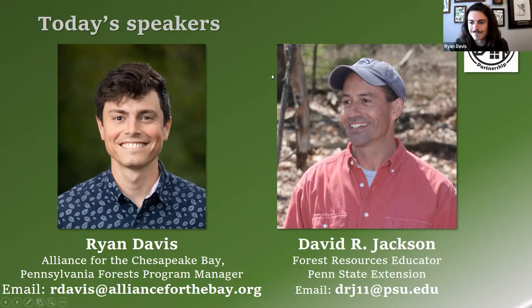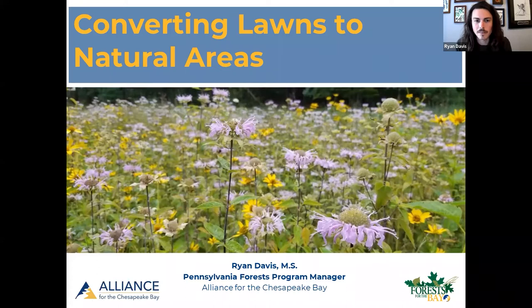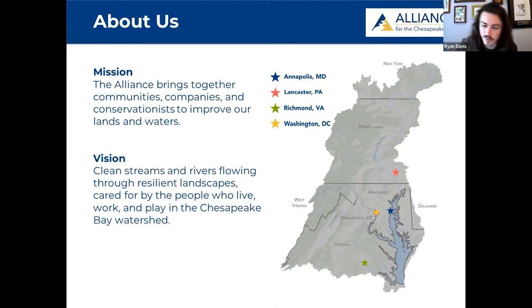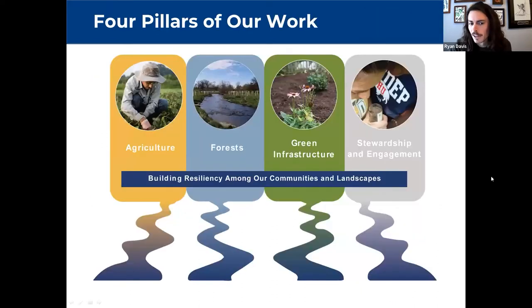Ryan Davis with the Alliance for the Chesapeake Bay is here to talk about converting lawns to natural areas. A bit of context on the organization: the Alliance is all about restoring the Chesapeake Bay watershed — restoring the watershed improves the bay itself and the local streams and communities that feed into it. They function exclusively with partners, as they're a small organization. The Woods in Your Backyard partnership is a good example. They have four program areas; agriculture and forests are biggest in Pennsylvania, with green infrastructure work in other areas through offices in D.C., Annapolis, and Richmond.